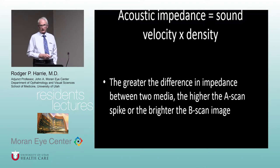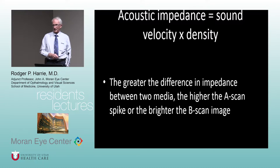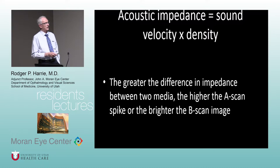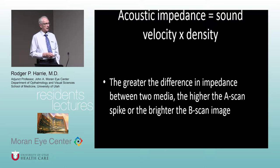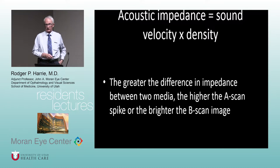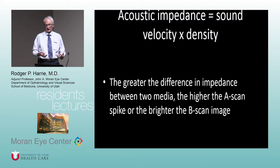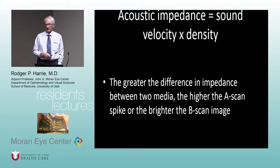The one physics equation worth knowing: acoustic impedance equals sound velocity times density. This is the basic principle behind ultrasound. The greater the difference in acoustic impedance between two media, the higher the A-scan spike or the brighter the B-scan image. Ultrasound works by reflection from tissue interfaces — the greatest difference in sound velocity and density between interfaces produces the highest spike on the A-scan or the brightest pixel on the B-scan.